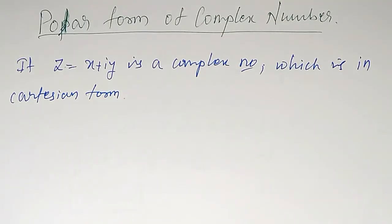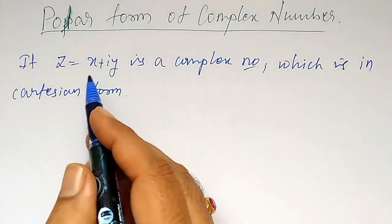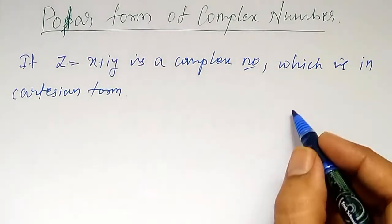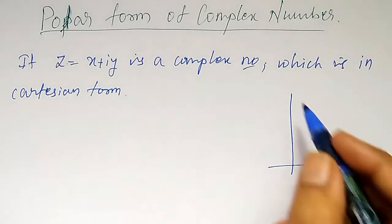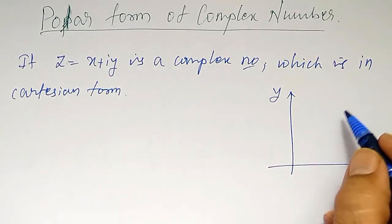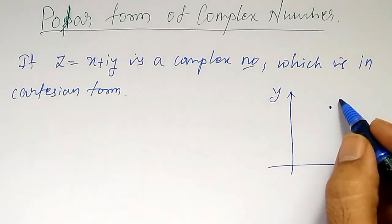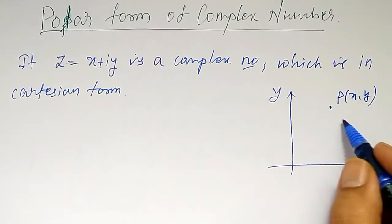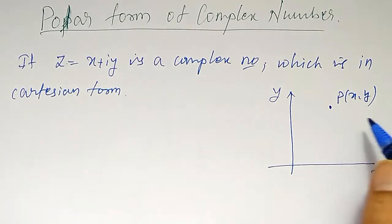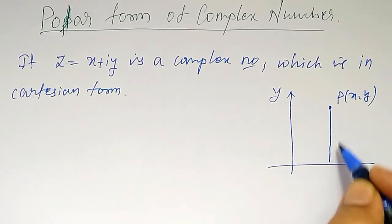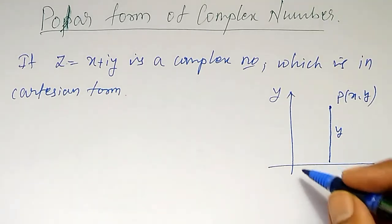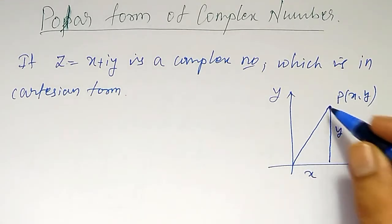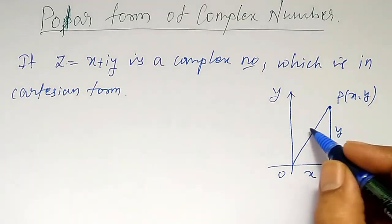Now, using this x and y, if I draw the x-axis and y-axis, this is along the y-axis. If I choose one point P(x, y), this is my y length and if it is x length, then if I join this origin to this P, this is called r.